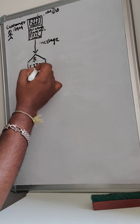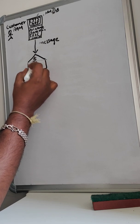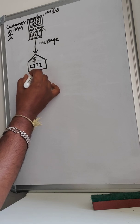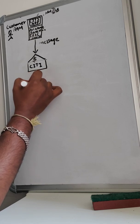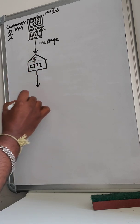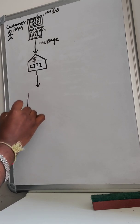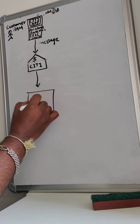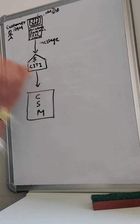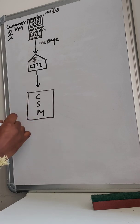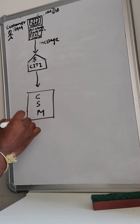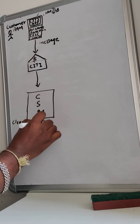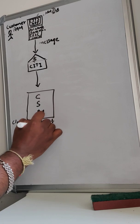Once Citi Bank receives this message request, it does some sort of validation before sending it to the Clearing and Settlement Mechanism — CSM as we call it.